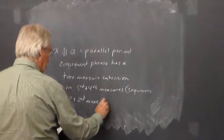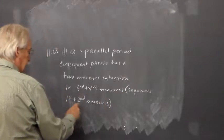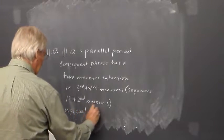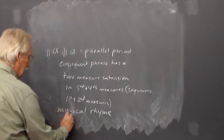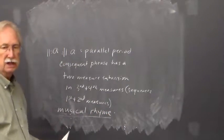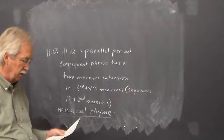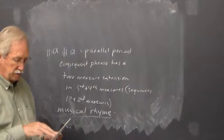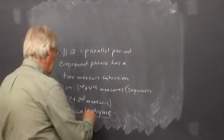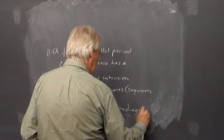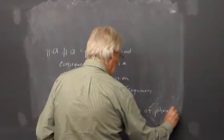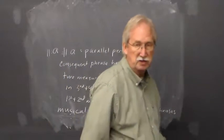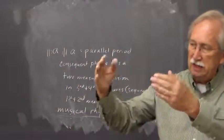In that second phrase, the third and fourth measures are sequenced up by step from the first and second measures of that second phrase. One other term used later in the book is the term musical rhyme. That's when the ending of two phrases is parallel. You can see how the last two measures of the antecedent phrase are parallel to the last two measures of the consequent phrase. So that doesn't really change anything as far as the terminology for phrase construction — it just denotes that situation where the endings are parallel.